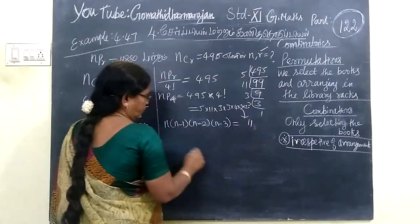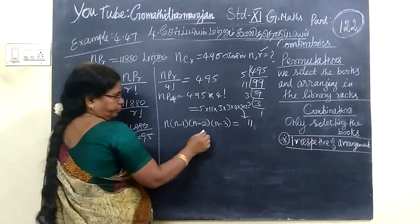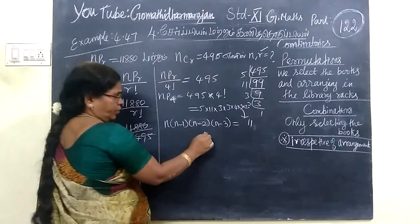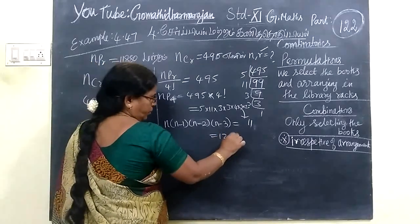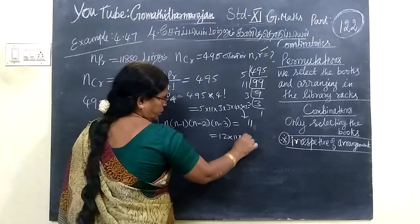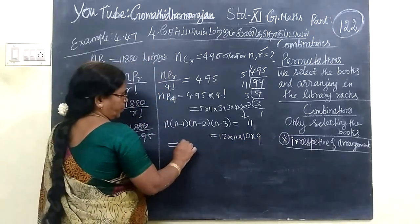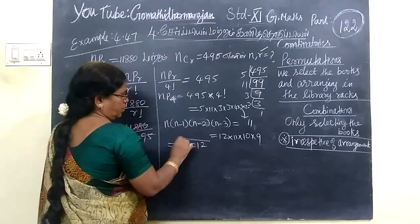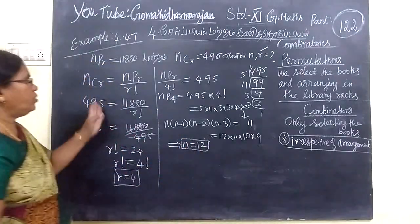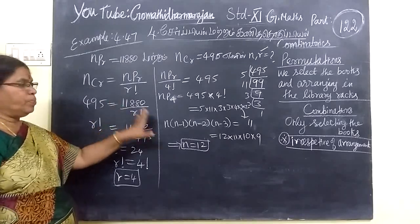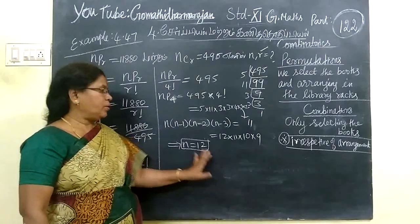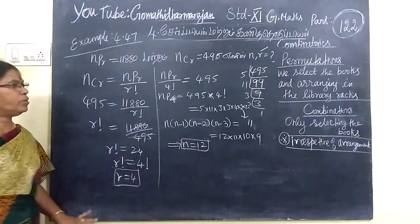This is equal to 12 into 11 into 10 into 9. So the whole value, N equal to 12. But in the answer we will see one more sum.